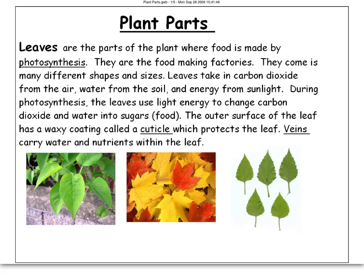The leaves take in carbon dioxide from the air, water from the soil, and energy from sunlight. They use all of that to help them make glucose, which is sugar.